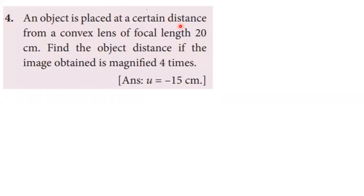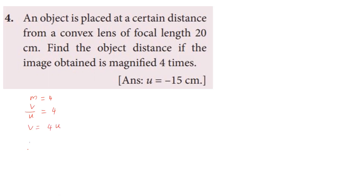Problem three: an object is placed at a certain distance from a convex lens of focal length 20 centimeter. Find the object distance if the image obtained is magnified four times. Given: focal length f equals plus 20 centimeter (convex lens), magnification equals 4.